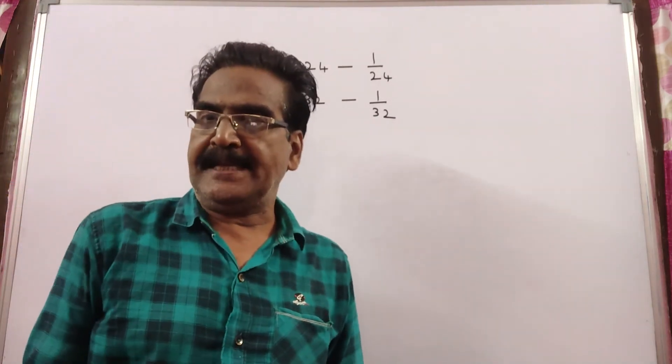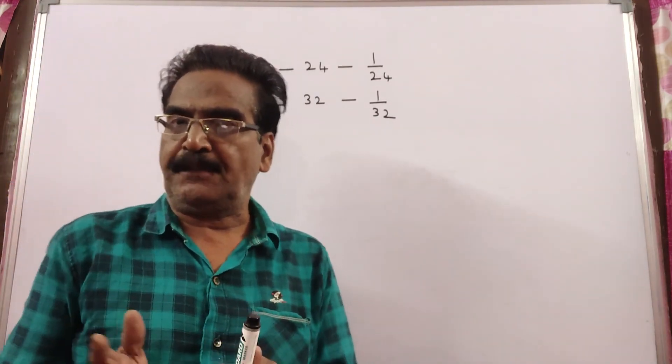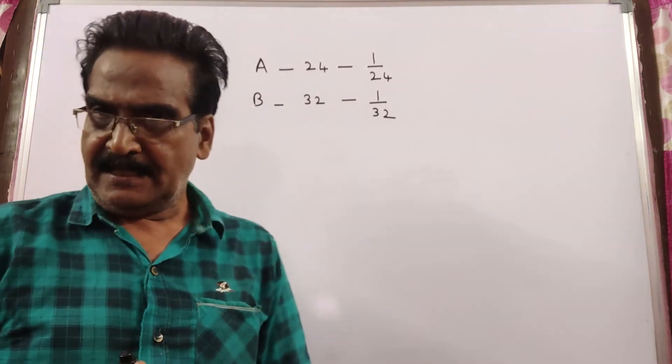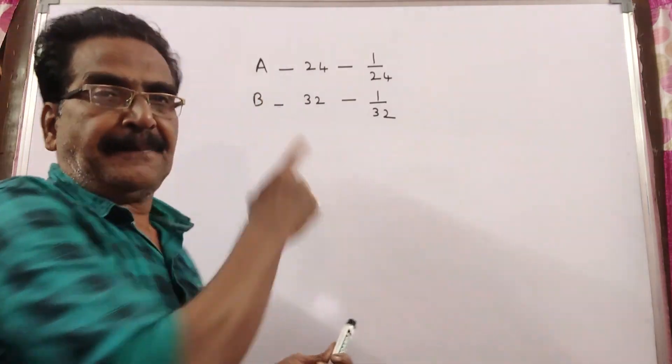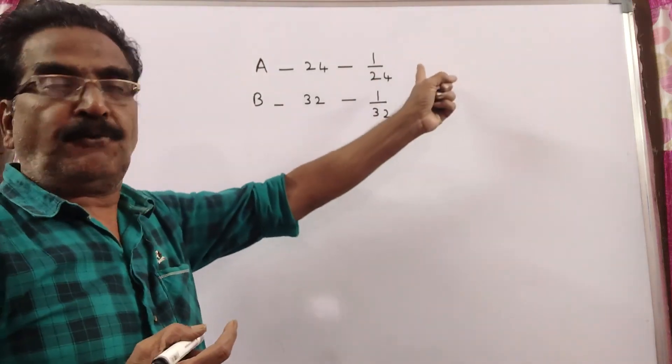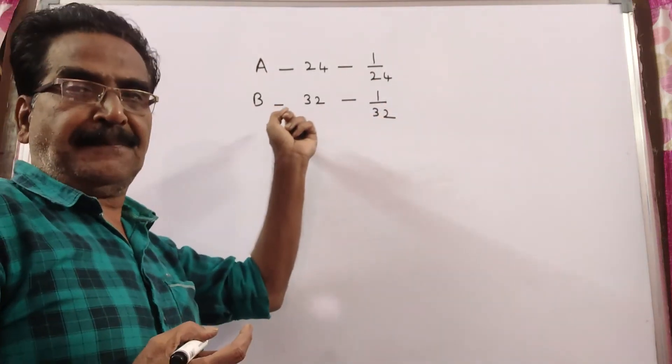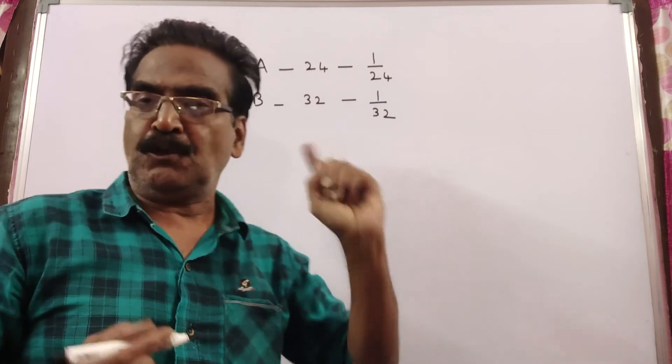Two pipes A and B can fill a tank in 24 minutes and 32 minutes. That means the work done by pipe A is 1 by 24 per minute and the work done by pipe B is 1 by 32 per minute.